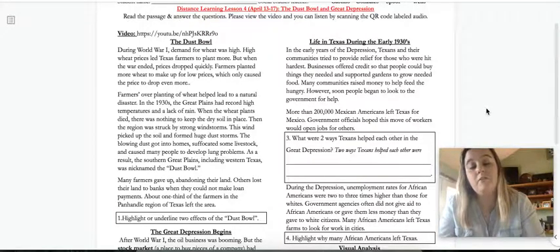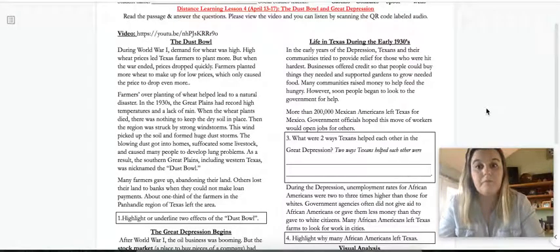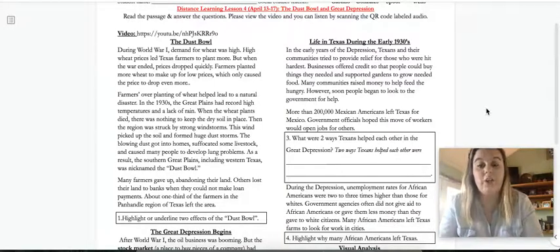So more than 200,000 Mexican Americans left Texas for Mexico. So if people had moved from Mexico to Texas hoping to find better work during the war because they were making a lot more money, now they realize, okay, I don't have a job here anymore. I'm going to go back to Mexico because Mexico wasn't having as much trouble as we were. Government officials hoped this move of workers would open jobs for others. And they say, okay, well, if we have all these people leaving, then all their jobs would be open. So number three says, what are two ways Texans helped each other in the Great Depression? So I want you to find two ways that they were helping each other in these two paragraphs. So the two ways Texans helped each other were, and I want you to write your two ways there.